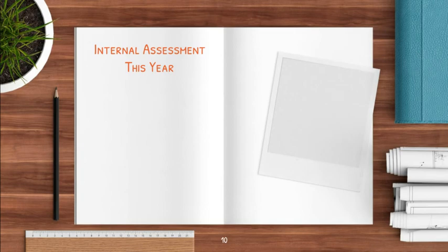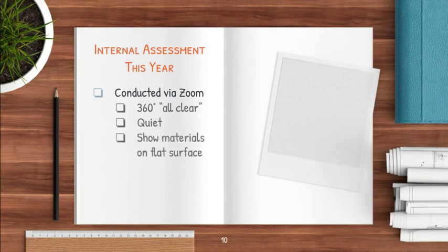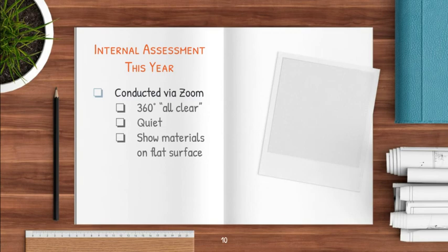The internal assessment this year will be done via Zoom, as I mentioned during the first week of school. There are three things to keep in mind about making that shift from doing it live to doing it via Zoom. You'll need to do a 360-degree all-clear, which is basically you taking the camera and spinning it around to show that there's nobody else in the room, nobody there to coach you, and that there aren't any additional visual aids that would give you an unfair advantage. We'll also just need to do the best we can to eliminate background noise as much as possible.